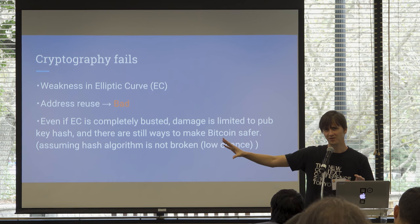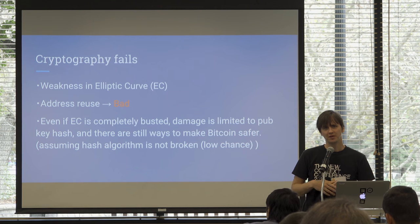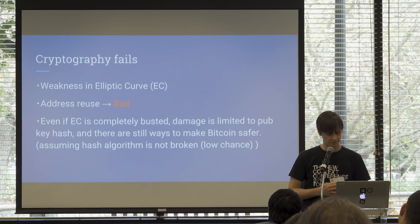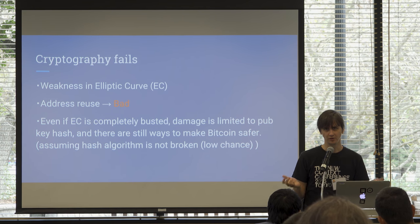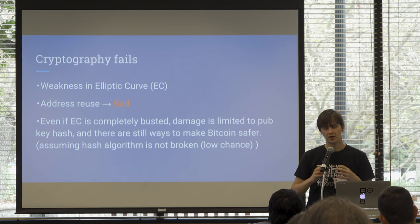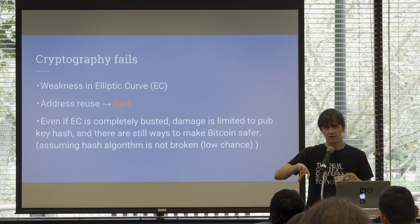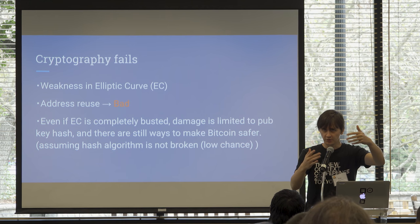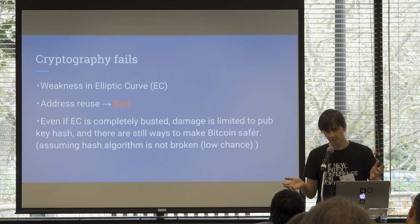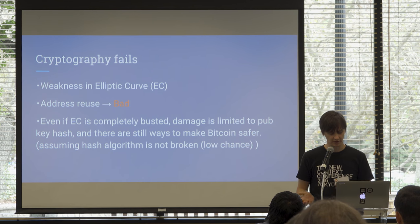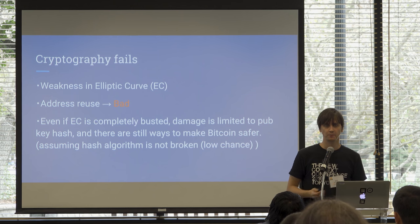Now into the realm of the theoretical: if cryptography were to fail, how would that affect us? Well, if you're reusing addresses — which we've repeatedly said you shouldn't — that's very bad. One of the strongest protections is that you never reveal your actual public key until you spend. If you spend from the same address using the same public key, you've exposed that public key. Assuming the hash algorithm itself is not broken — which is very unlikely — then even if elliptic curve cryptography were completely broken, you would still be okay, as long as you haven't reused addresses.